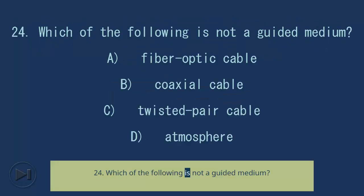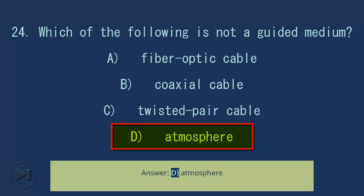Question 24: Which of the following is not a guided medium? A) fiber optic cable, B) coaxial cable, C) twisted pair cable, D) atmosphere. Answer: D, atmosphere.